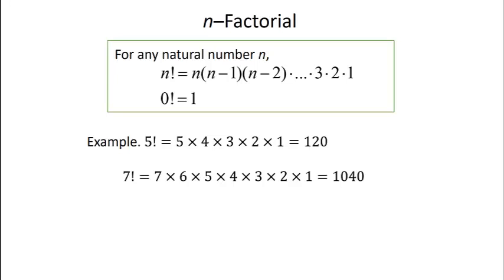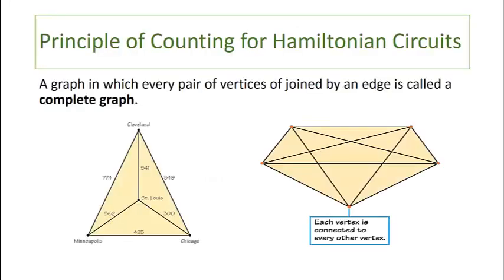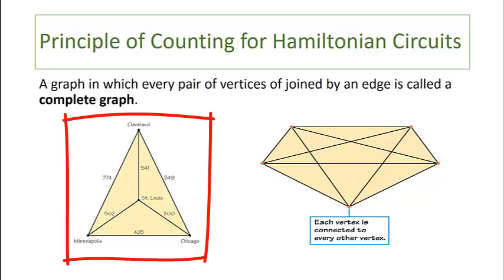Now what in the world does this have to do with graph theory and our vacation planning problem? Great question. Let's apply the principle of counting for Hamiltonian circuits. A graph in which every pair of vertices is joined by an edge is called a complete graph.